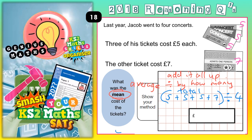You could do a bus stop method to work that out: 22 divided by 4. 4s into 2 won't go, so carry it. 4s into 22 goes 5 times with 2 left over. But you can't carry the 2 to an empty column, so you put a 0. And you can't put a 0 on the 22 — you need a decimal point, otherwise you're turning 22 into 220. So 4s into 20 goes 5 times.